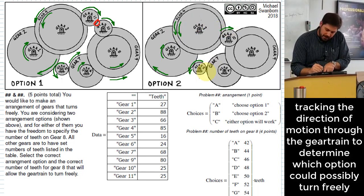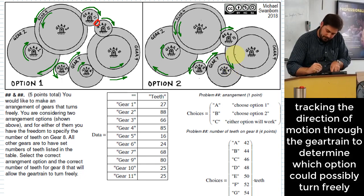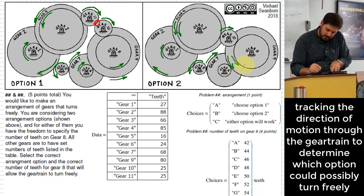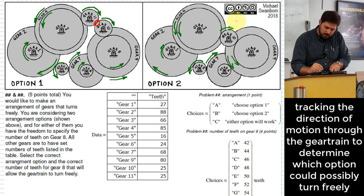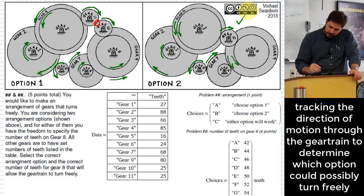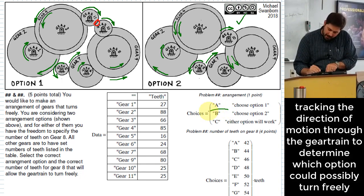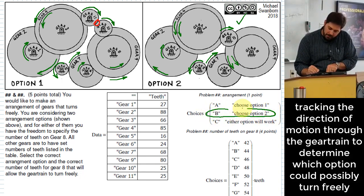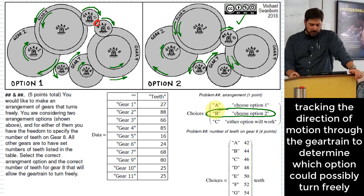We can kind of do a similar thing over here. We had counterclockwise, which means this goes clockwise, means this goes counterclockwise, clockwise. Which means it makes gear 10 go clockwise. So we want option two. So for choice number one, we want to say, I want to pick option two if what I'm going for is to make this gear train turn freely.